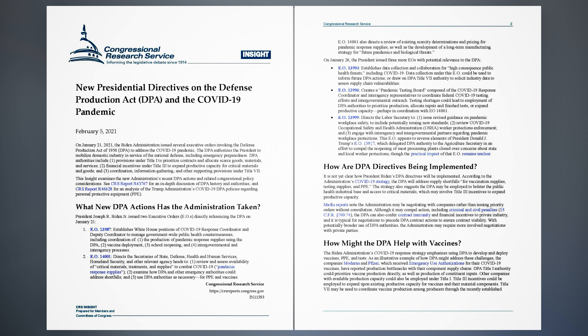See CRS Report R43,767 for an in-depth discussion of DPA history and authorities, and CRS Report R46,628 for an analysis of the Trump administration's COVID-19 DPA policies regarding personal protective equipment (PPE). What new DPA actions has the administration taken? President Joseph R. Biden Jr. issued two executive orders (EOs) directly referencing the DPA on January 21.